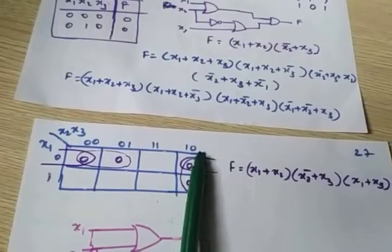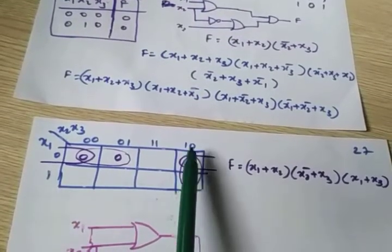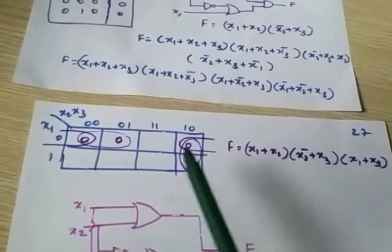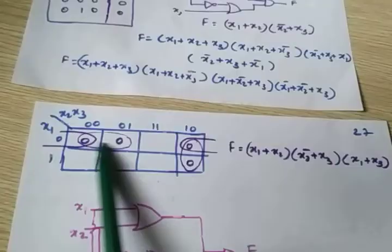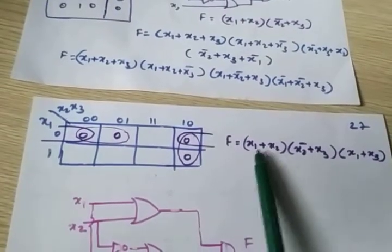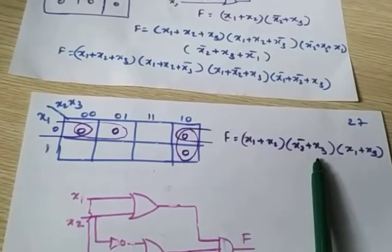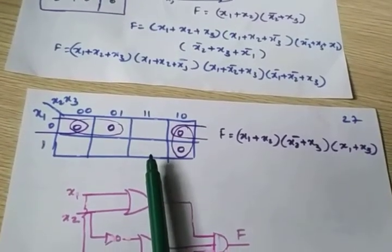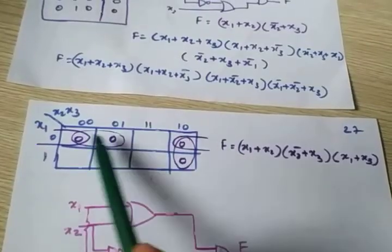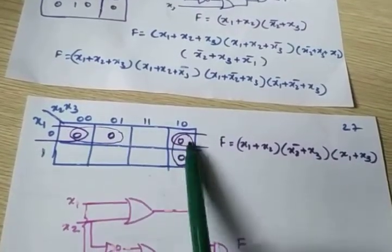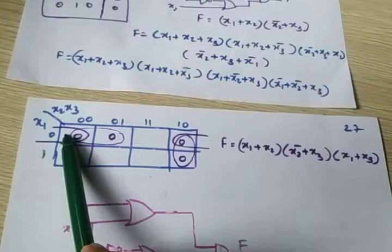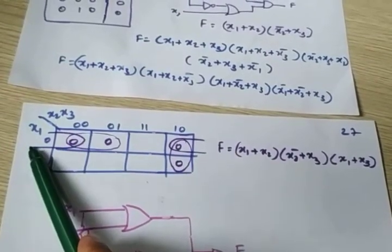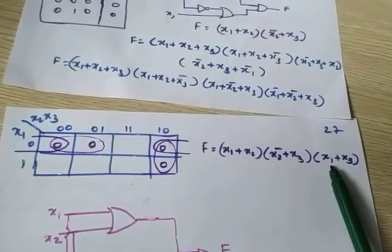And 1,1,1 gives output 0. Now we can group these zeros. Grouping one pair gives the equation (x1 plus x2) and grouping another pair gives (x2bar plus x3). But in order to eliminate the static zero hazard, you have to consider the redundant group. Pairing those two zeros gives x1 plus x3.